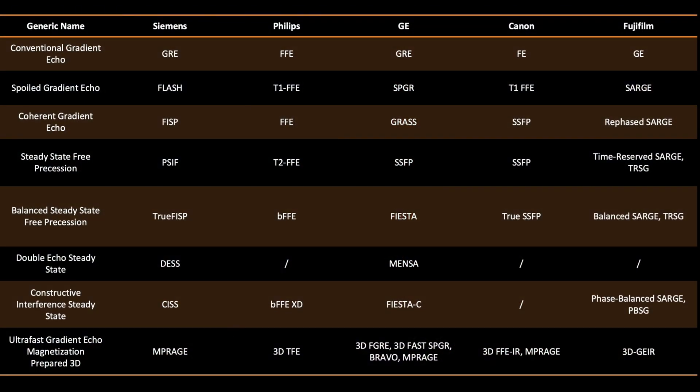Navigating MRI sequences — and in particular gradient echo sequences — can be quite overwhelming, especially since different MRI manufacturers use a wide range of names for techniques that are fundamentally similar. To help with that, you can find here a brief comparison table to make it easier to link each sequence across various vendors. Feel free to pause the video or take a screenshot if you'd like to review this later or look at a specific family of sequences in greater detail.